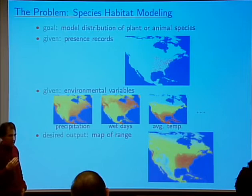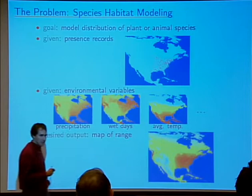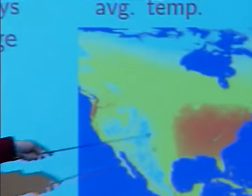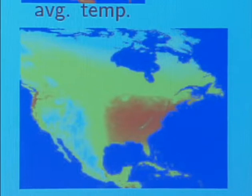We're interested in areas of suitable habitat, which would include areas where the species doesn't actually live — biologists are interested in identifying areas where they could potentially live, even though they don't, probably because there are geographic barriers that prevent them from getting there. Or it's also possible that the model is wrong.